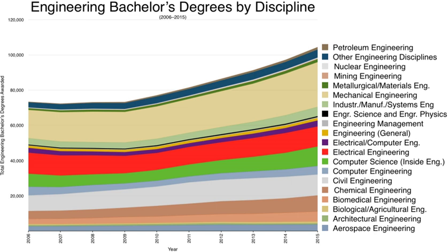Civilingenjör programs are offered in a broad range of fields: Engineering Physics, Chemistry, Civil Engineering, Surveying, Industrial Engineering and Management, etc. There are also shorter three-year programs called Högskoleingenjör (Bachelor of Science in Engineering) that are typically more applied.